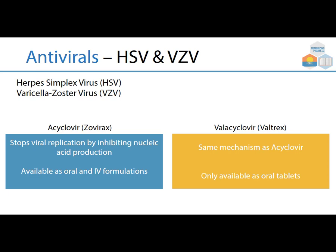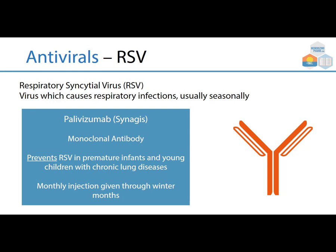Respiratory syncytial virus, or RSV, causes respiratory infections usually seasonally. Palivizumab, brand Synagis, is a monoclonal antibody — you can see that by the '-mab' at the end of the name. It primarily affects premature infants and young children with chronic lung diseases, and it's given as a monthly injection through the winter months.